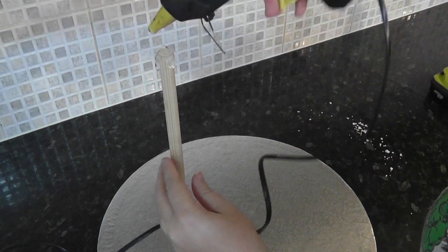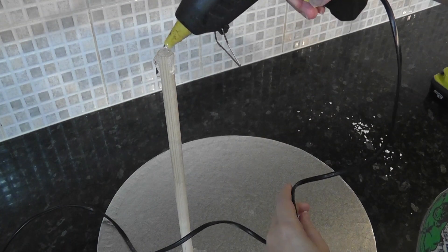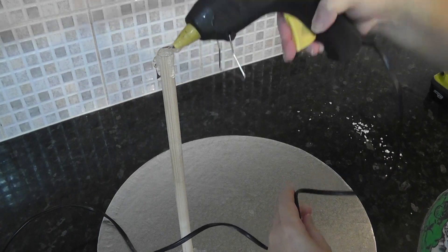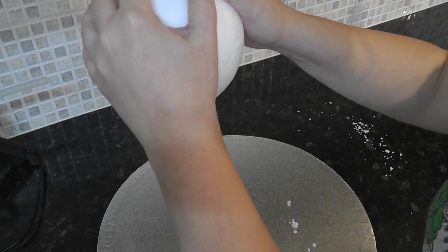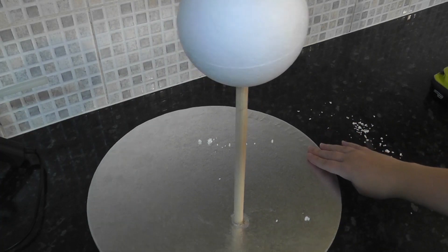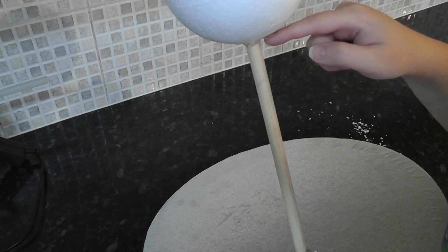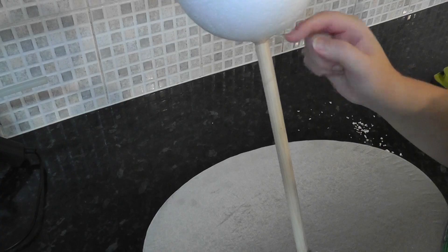Hot glue can actually melt polystyrene, so add it to the stick first. This will start to cool quite quickly, so as you slide the ball over it, it should be just hot enough to stick it but not hot enough to melt it. Push up any glue that remains once it's cool enough to do so.